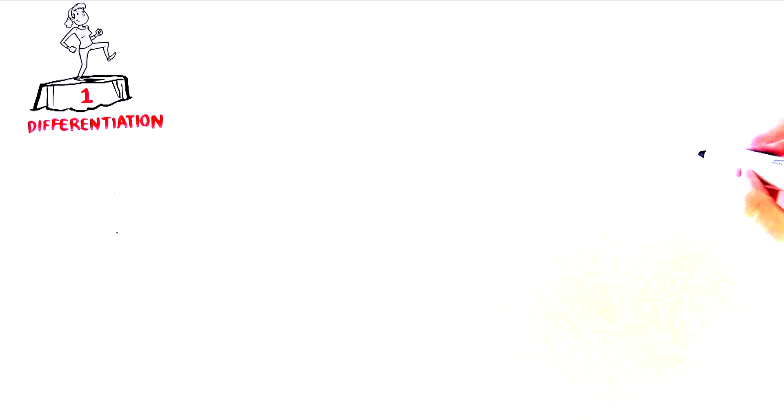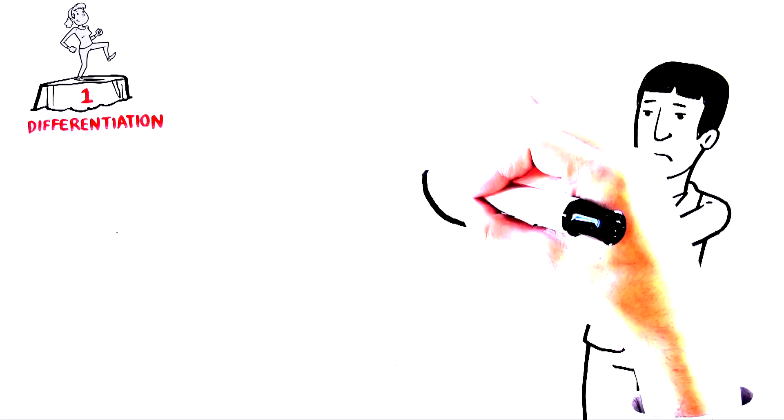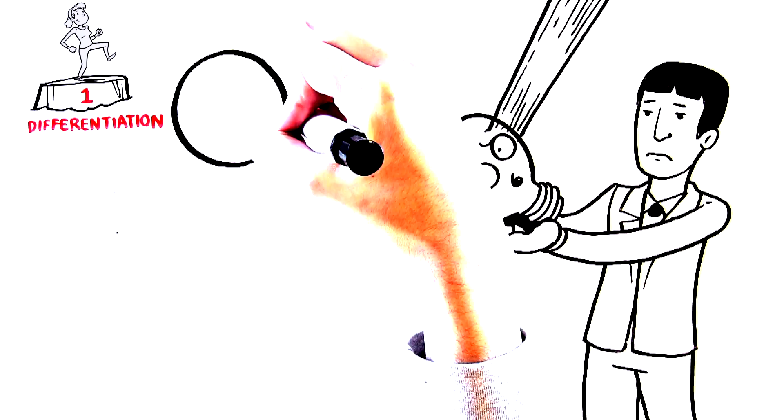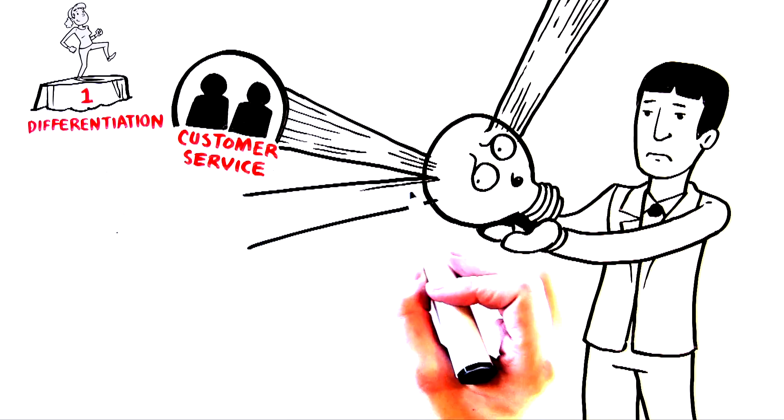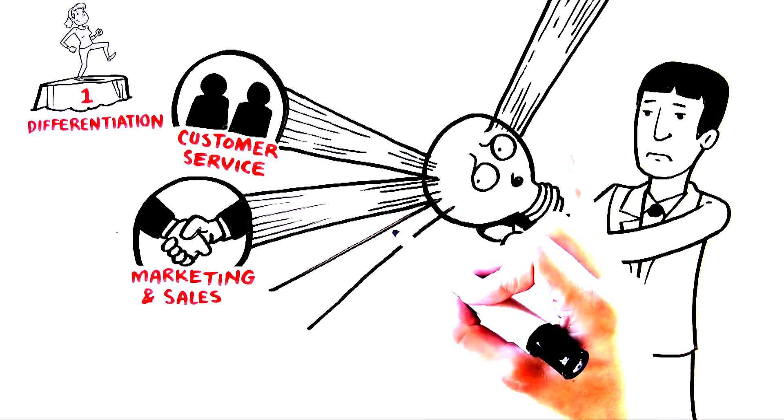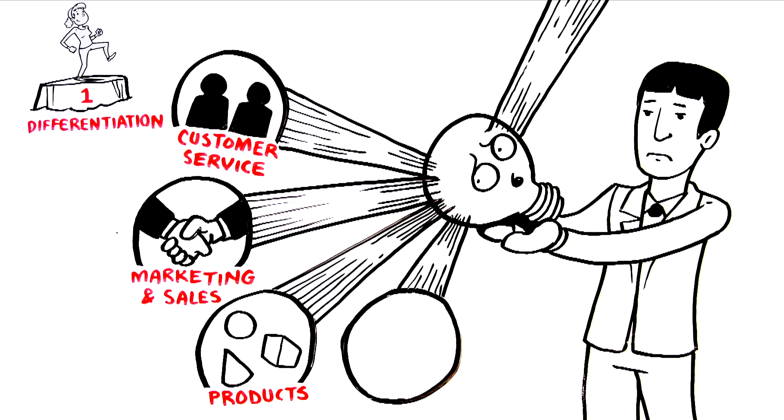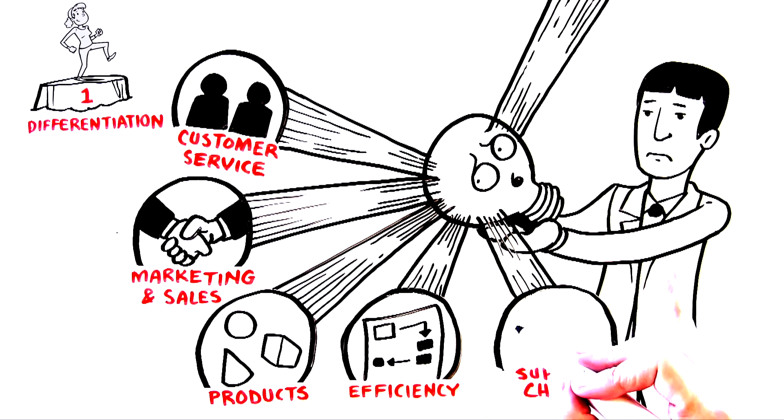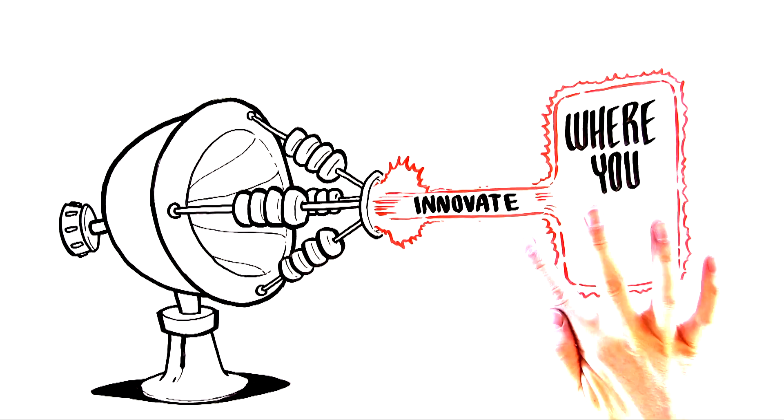To begin with, most companies dilute their innovation investments by trying to improve every aspect of their business. However, you can't be the best at everything. Therefore, the first step in increasing your innovation ROI is to determine what makes your organization unique and focus your energies there. In other words, innovate where you differentiate.